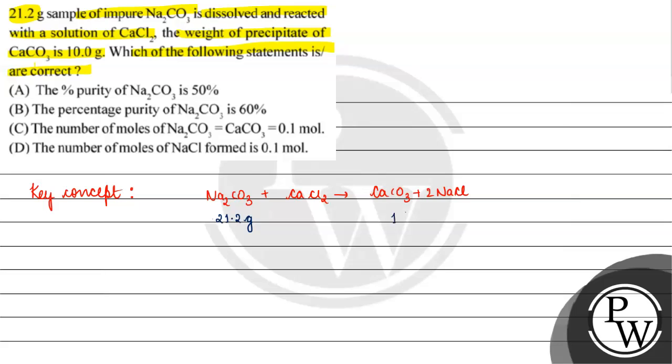And what we have told is 10 gram of calcium carbonate. So, if we talk about it, the moles of calcium carbonate will come out to be 10 gram by 100 gram per mole. Number of moles is basically mass by molar mass, this will come out to be 100 gram per mole.